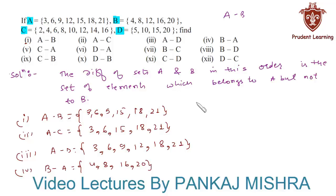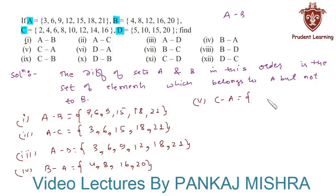Next we have to find C minus A. This is equal to the set of all elements that are in C but not in A. Here we can see that 2, 4, 8, 10, 14 and 16 are in set C but not in A.